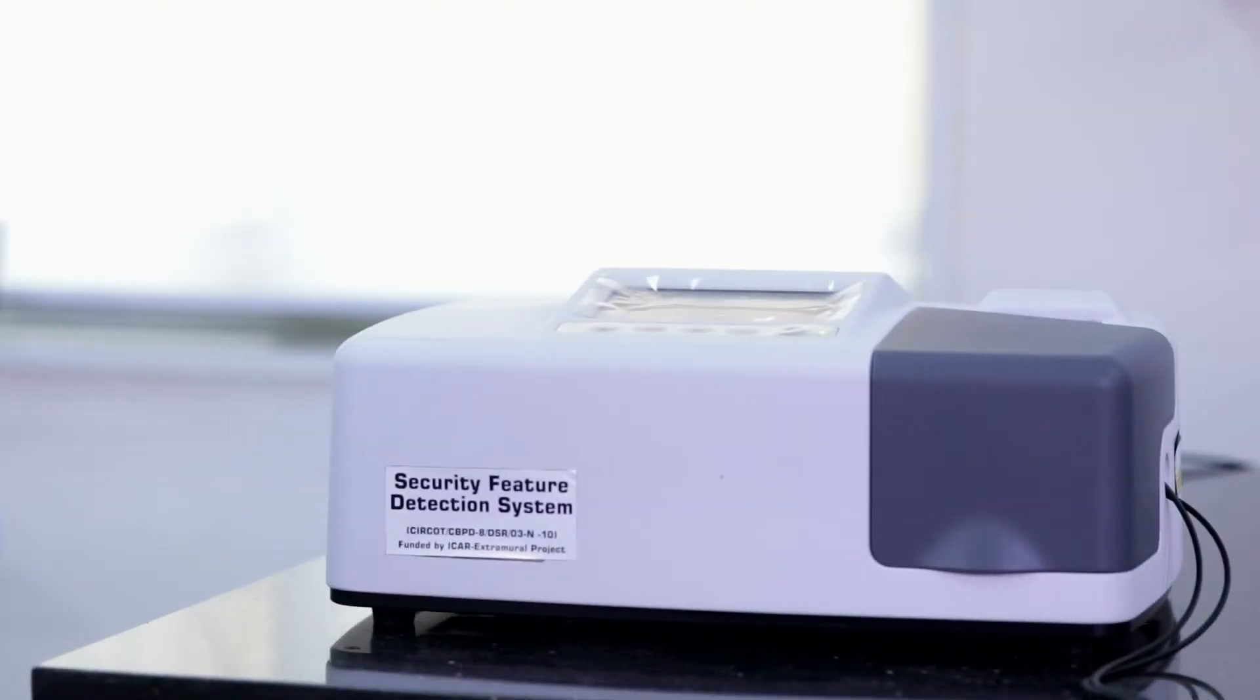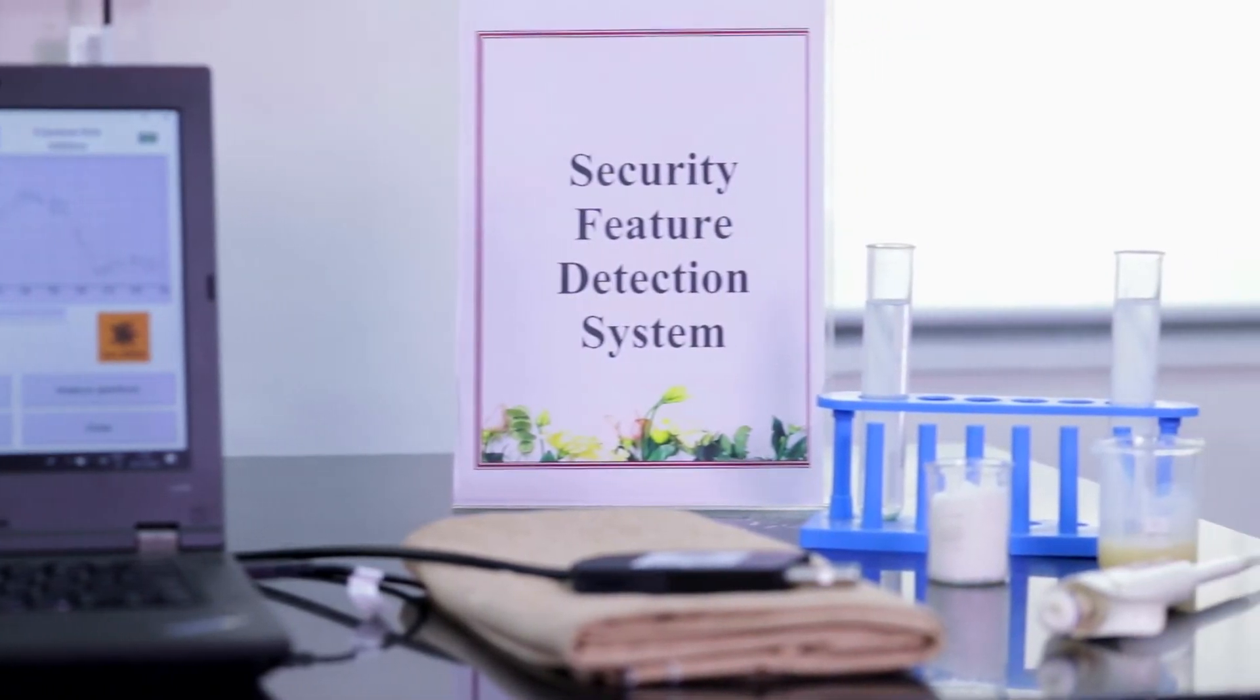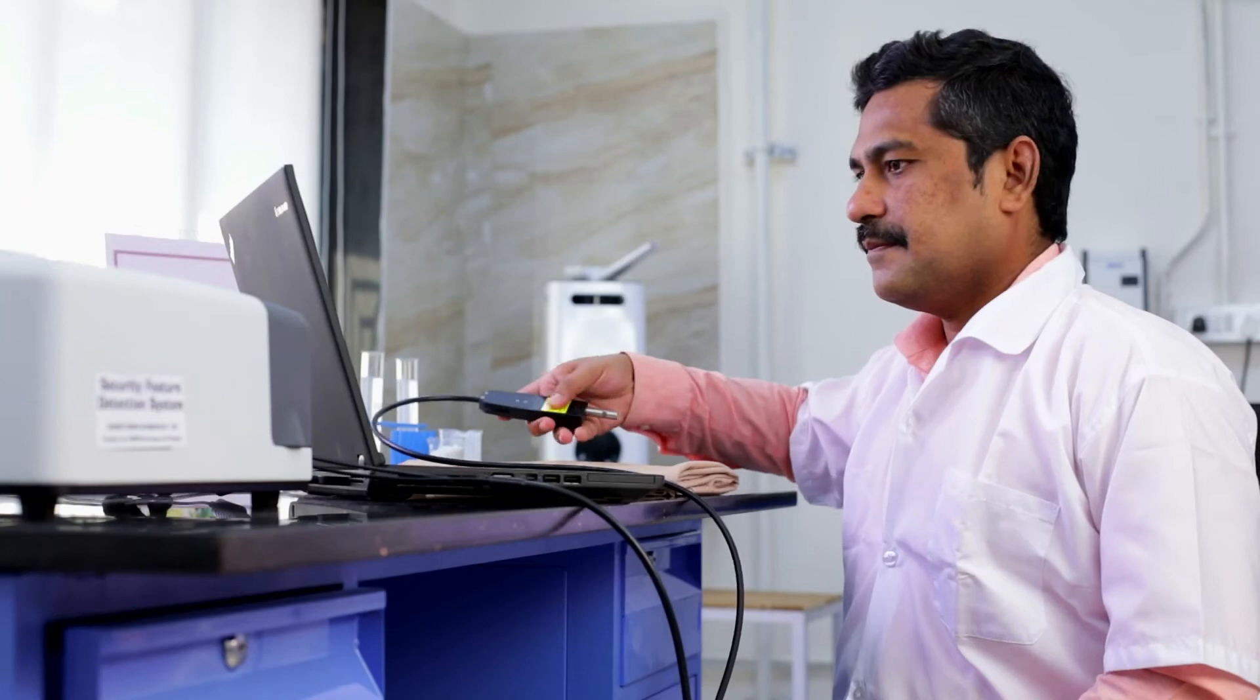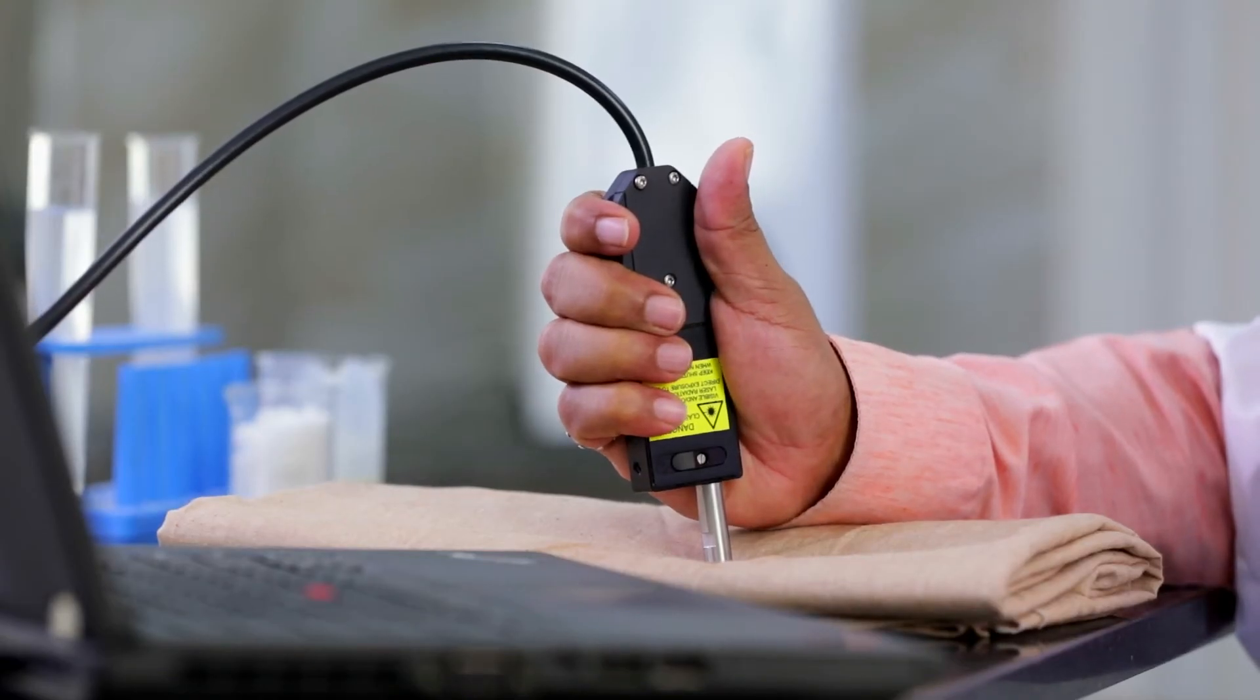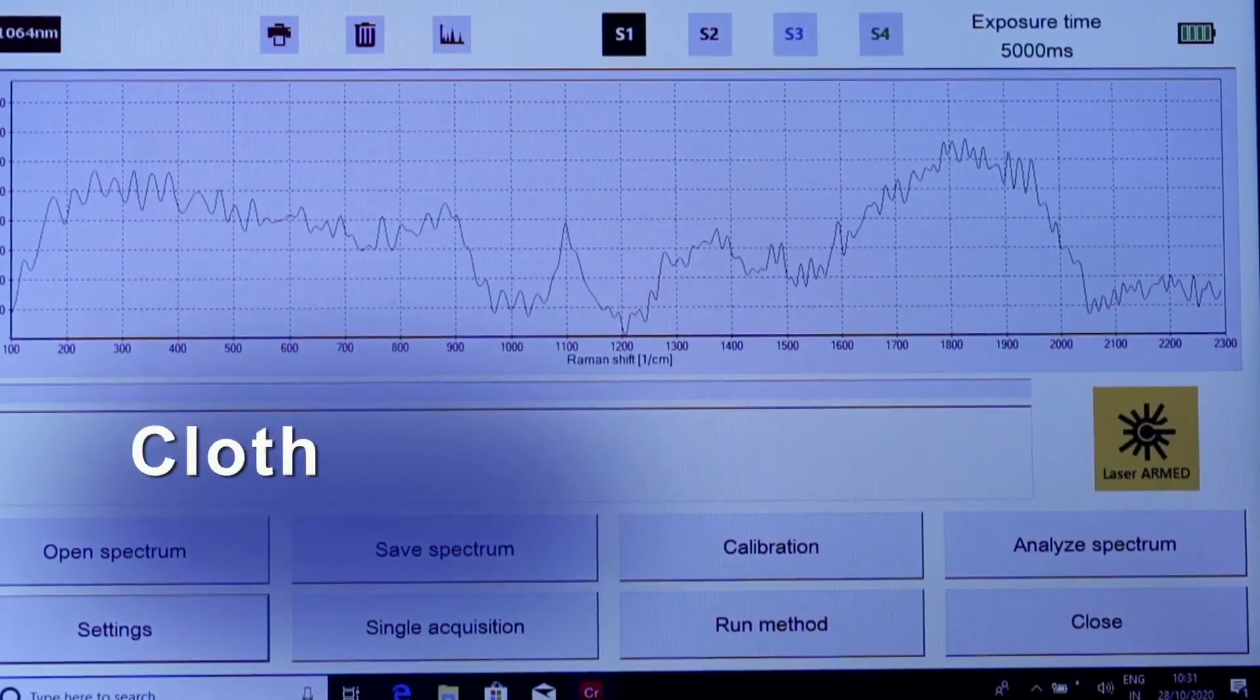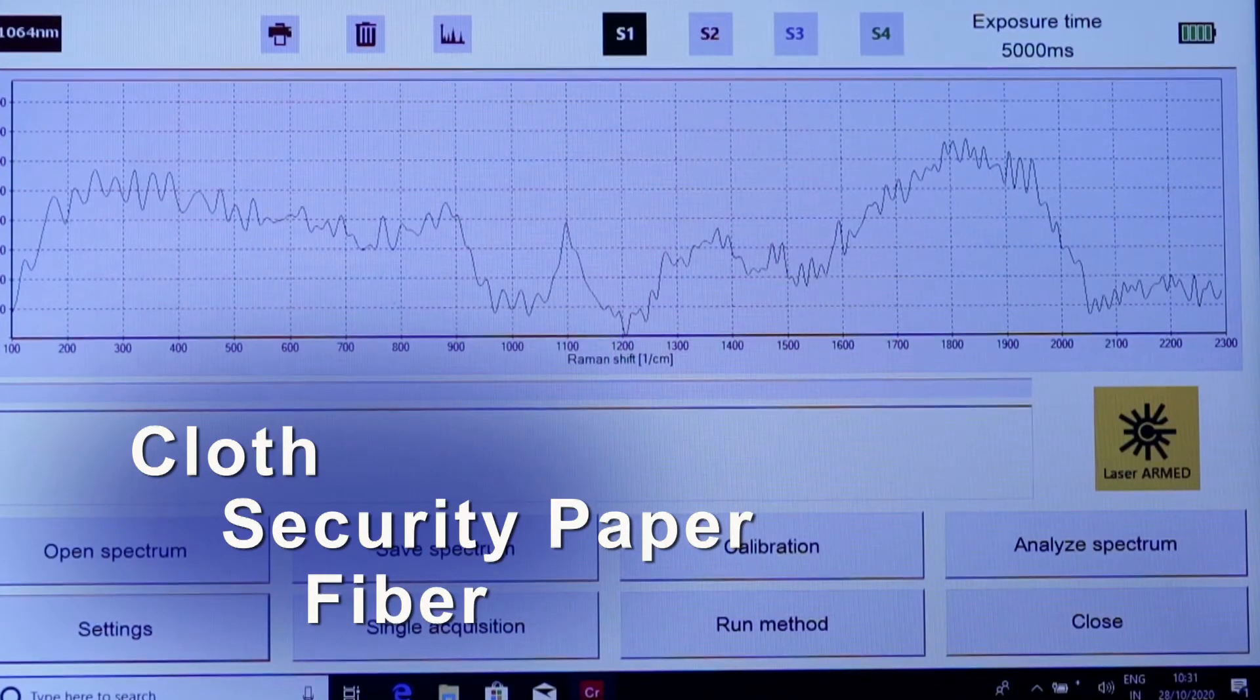This instrument is working on the principle of collecting scattered light after laser excitation of the sample and confirms the identity of different compounds. It is used in the qualitative and quantitative analysis of substances in trace amounts on different matrices such as cloth, security paper, fiber, etc., without extensive sample preparation in a non-destructive manner.